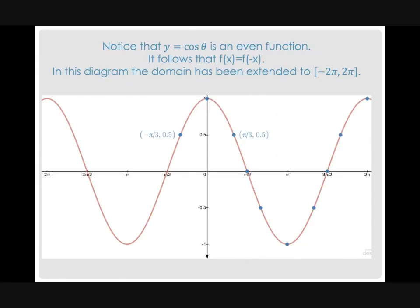Cosine is an even function, meaning that f(x) is equal to f(−x). And notice we get the same y output, whether you have π/3 or negative π/3.